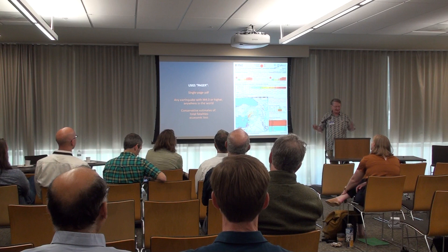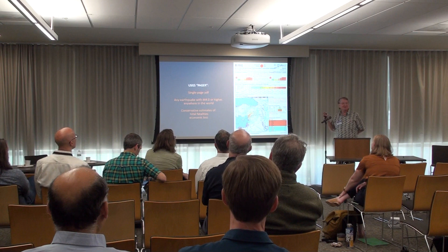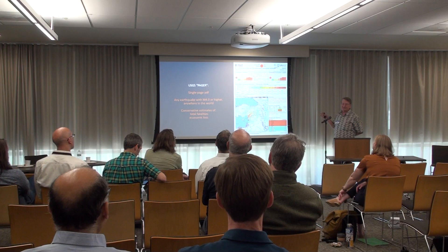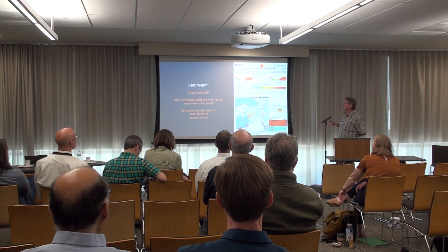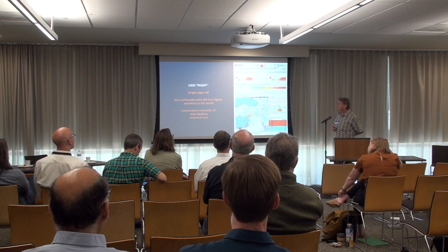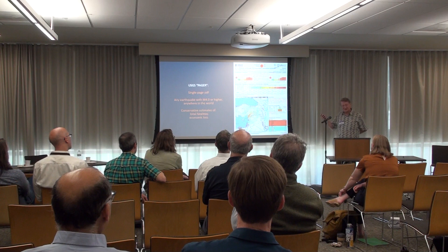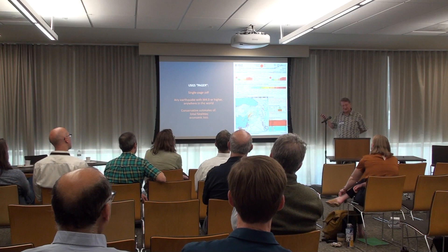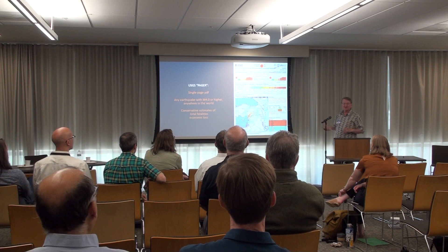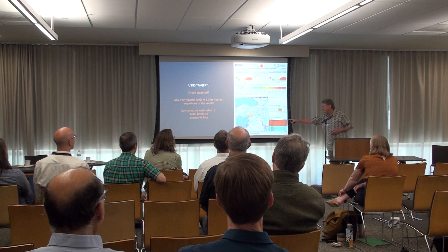PAGER is actually an acronym for Prompt Assessment to Global Emergency Response. USGS generates this single-page concise product with information about the earthquake, including estimated fatalities and economic losses. This example is the Magnitude 7.8 earthquake in Turkey — obviously a red alert in both fatalities and economic impact. PAGER is not a Two-Pager; FEMA didn't kick in because this was not in the United States. But it gives you some selected city exposure estimates, though you really want something finer-grained.